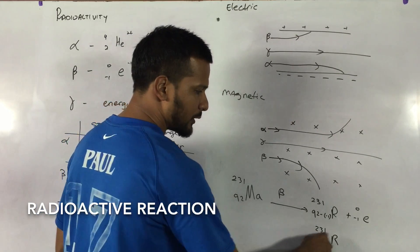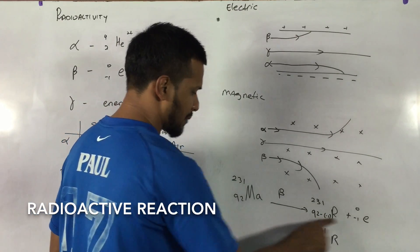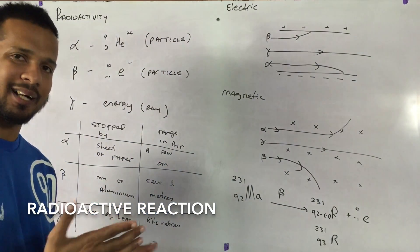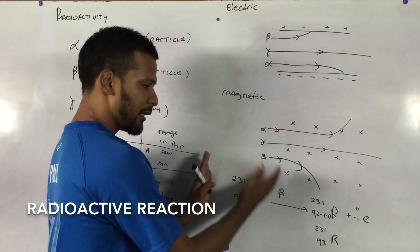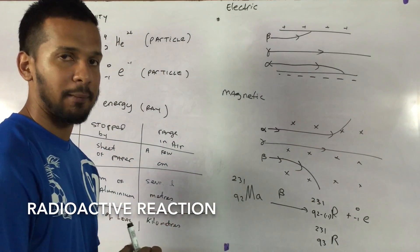Let's check it again. 231 plus 0 is very good. 93 plus minus 1 is 92. So that's the way you balance these equations based on the particles that you lose. Make sure the reactants and the products in nuclear and the atomic number add up to be the same.